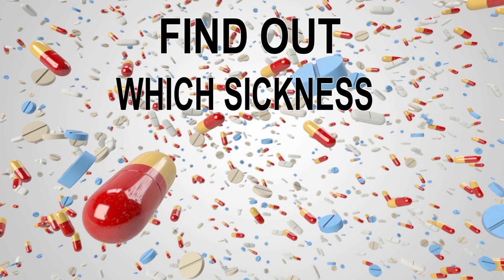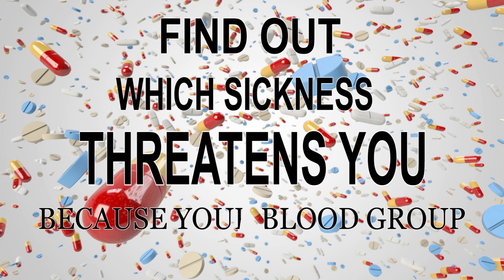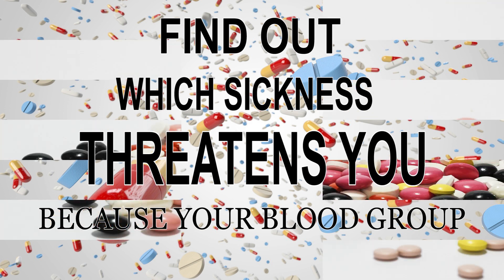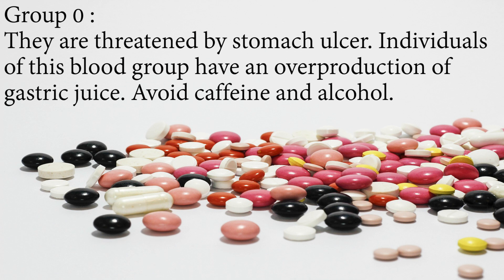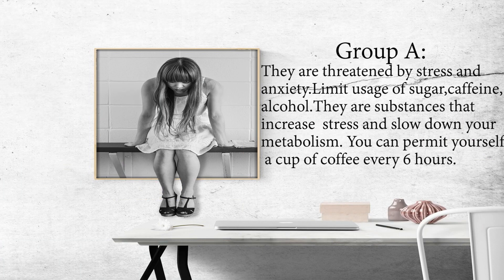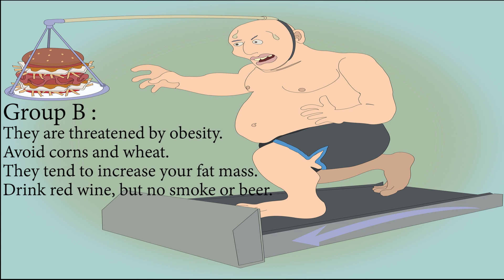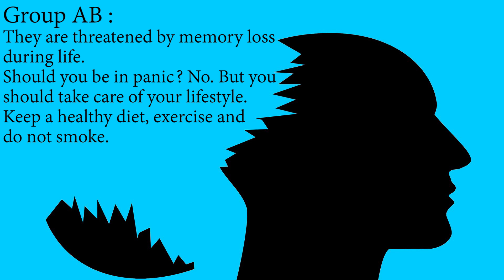Every blood group has a different ability to fight sickness. Group O is threatened by stomach ulcers due to overproduction of gastric juice — avoid caffeine and alcohol. Group A is threatened by stress and anxiety — limit sugar, caffeine, and alcohol, as they increase stress and slow metabolism. Group B is threatened by obesity — avoid corn and wheat, drink red wine, but avoid smoking and beer. Group AB is threatened by memory loss during life — keep a healthy diet, exercise, and do not smoke.